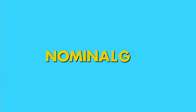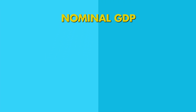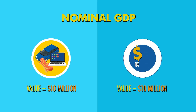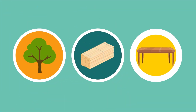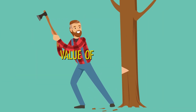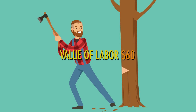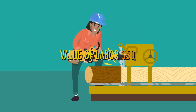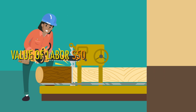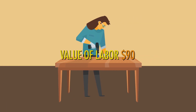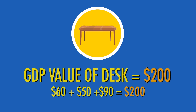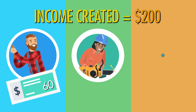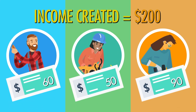But economists may still use nominal GDP for other purposes. For instance, by looking at the value of its nominal GDP, a country can determine the national income generated from the production of goods and services in a given year. Here's a simple example. Suppose there are three steps involved in creating a wooden desk. First, Chris charges $60 to harvest the trees that yield wood for the desk. Second, Victoria charges $50 to convert the raw wood into boards. Third, Gina charges $90 to build the desk. The GDP value of the desk is $200, the sum of these three production costs. The value of $200 also represents the amount of income created for the workers who made the desk.